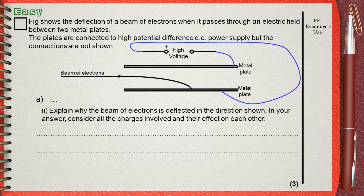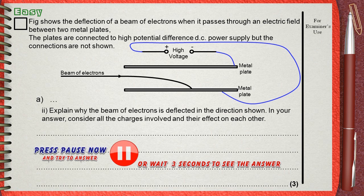Question part (ii): Explain why the beam of electrons is deflected in the direction shown. In your answer, consider all the charges involved and their effect on each other.